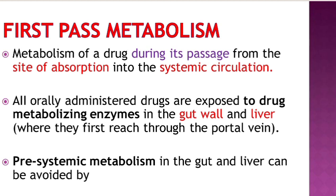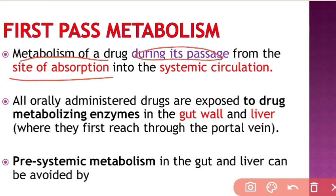First pass metabolism is the metabolism of a drug during its passage from the site of absorption into the systemic circulation, or we can say before it reaches to the systemic circulation.